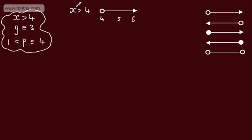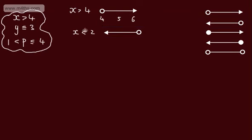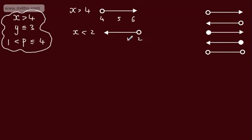Is the number bigger than 4? Quite clearly 6 is bigger than 4. For x strictly less than some value, say 2, we're looking for all numbers less than 2. On a number line we use an open dot — the open dot corresponds to the strict inequality. We locate 2, then we could have 1, 0, minus 1 and so on. The 2 is not included. Is minus 1 less than 2? Clearly it is, so it satisfies the inequality.